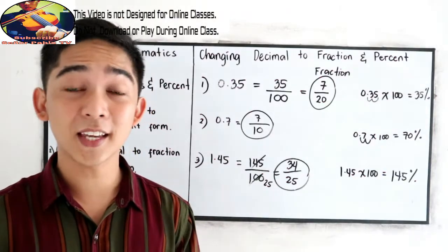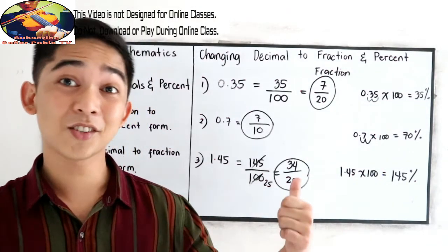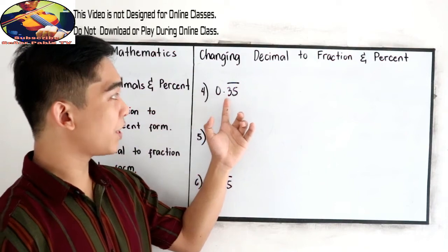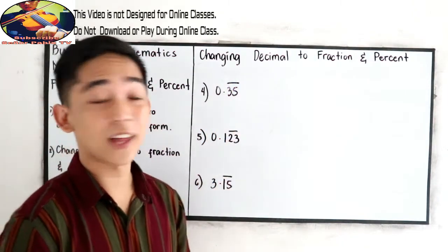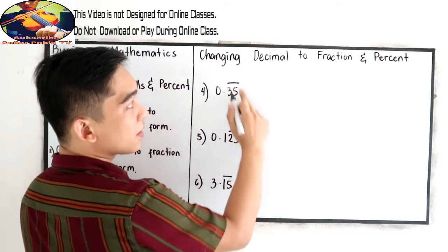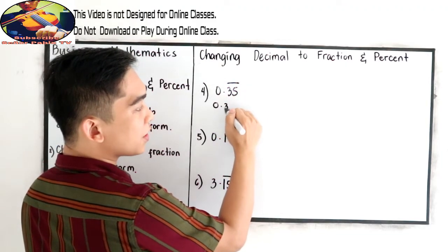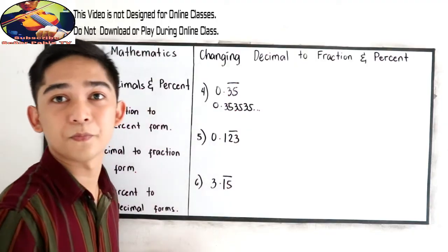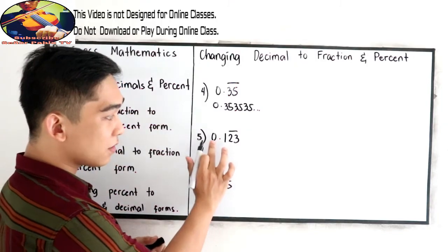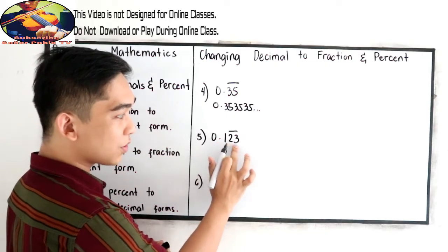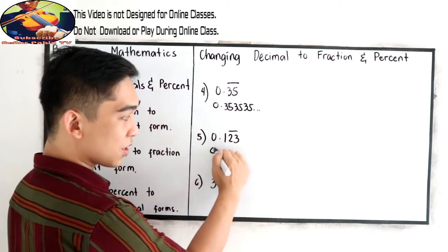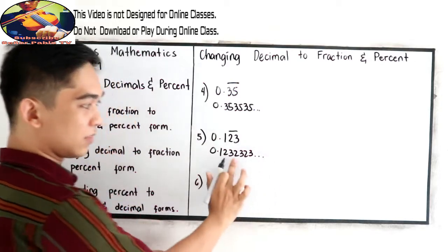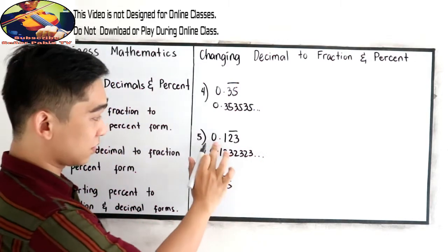What if we have repeating and non-terminating decimals? Let's check example number four. What if we have the following examples? 0.35 with bar. So that indicates that this decimal is equivalent to 0.35, 35, 35, and ellipse sign. Continues, repeating decimals.